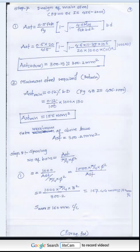Spacing of main steel bars: Using 8mm diameter bars in the slab, spacing = 1000 × (π/4 × 8²) / Ast = 160mm center to center. This is the calculated spacing for the main steel.